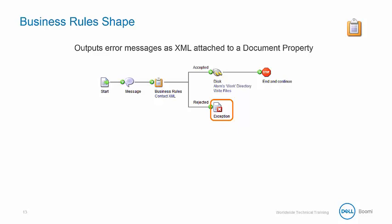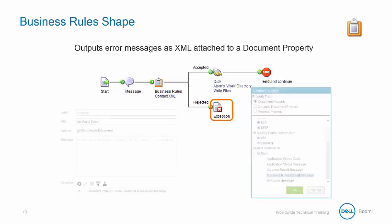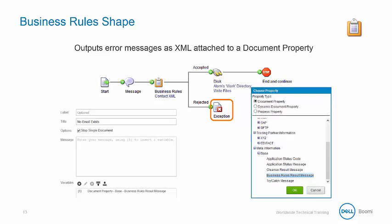Notice how the business rule's rejected path flows to an exception shape in our example. Within the exception shape's properties window, error messages can easily be configured. A parameter can then be bound to a built-in business rules results message document property.